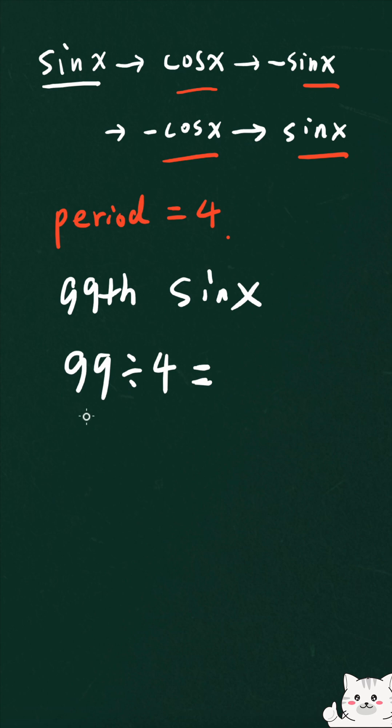So if the remainder is 3, then you can count it over here. 1, 2, 3, then the 99th derivative is equal to negative cosine x.